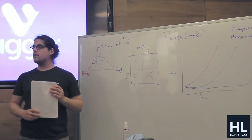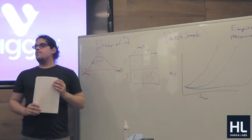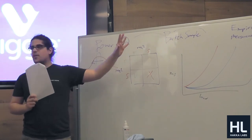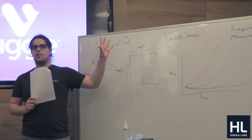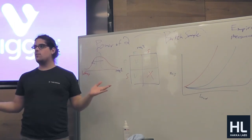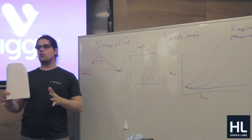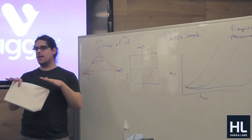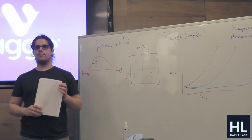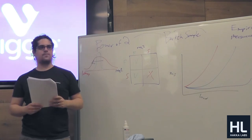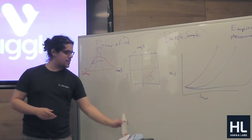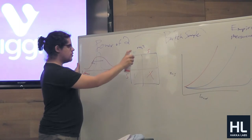One question: doesn't this assume all servers are equal in their ability to serve? It does. That's what the empirical measurement technique compensates for — instead of assuming all servers are equal, we measure how servers are actually doing right now and schedule based on that information.